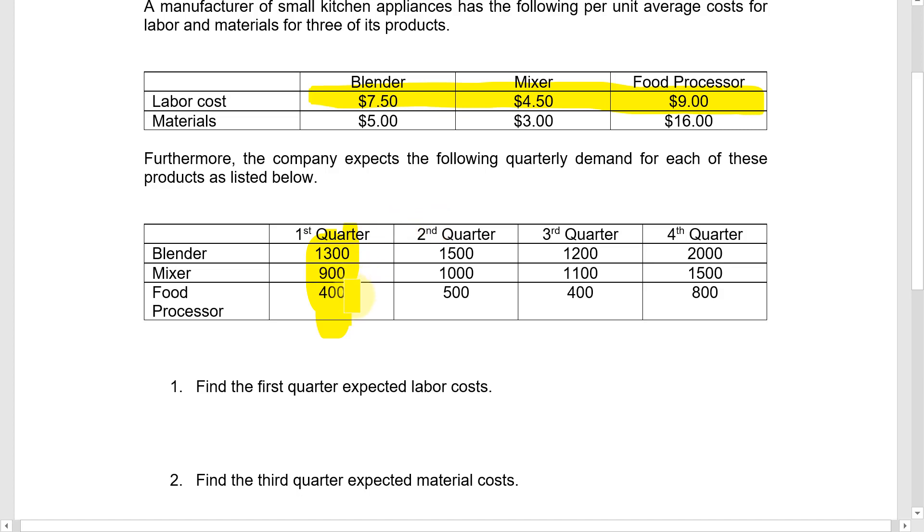And multiplying the $400, since that represents demand for food processors, times the labor cost for producing food processors, that's $9, times the $400, that would be labor costs from that appliance. And adding all those together is the total first quarter labor costs.